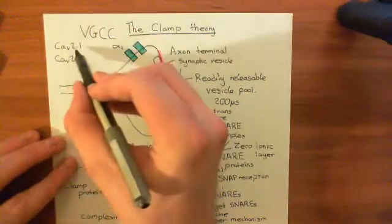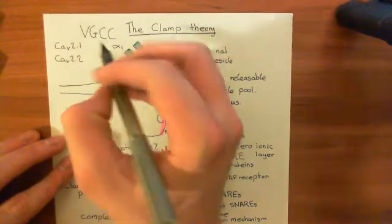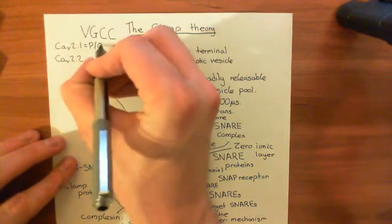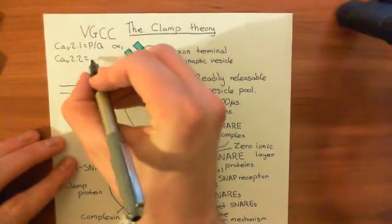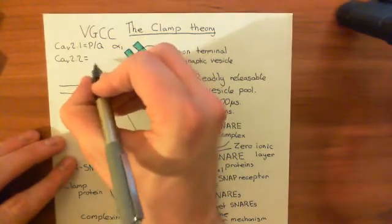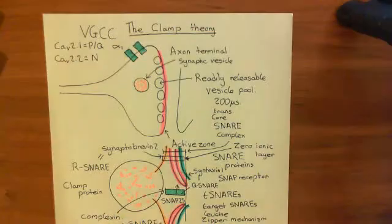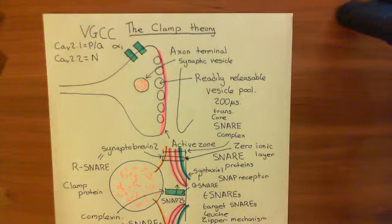If you use CAV2.1 to make your alpha-1 subunit, then the voltage-gated calcium channel you produce is what's known as a PQ-type voltage-gated calcium channel. If you use the CAV2.2 alpha-1 subunit, then the voltage-gated calcium channel you produce is an N-type voltage-gated calcium channel. Therefore, the voltage-gated calcium channels in neuronal axon terminals are PQ- or N-type.